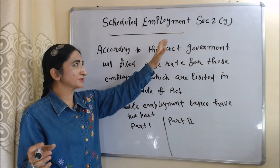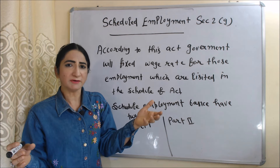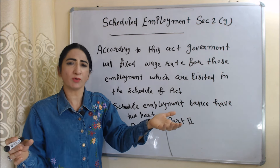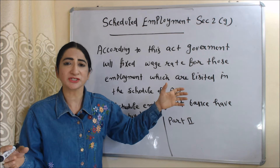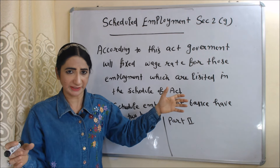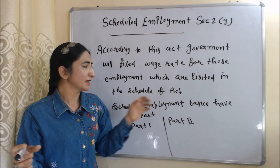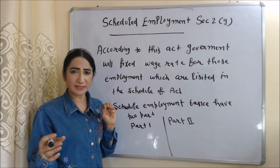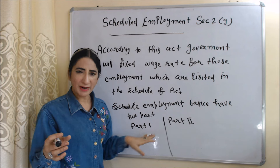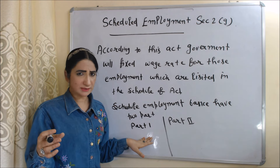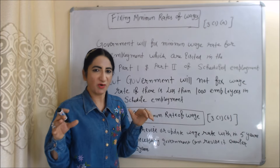Now we are going to talk about scheduled employment. According to Section 2(g) of this act, the government will fix the minimum wage rate only for those employments which are listed in the schedule of this act — these are called scheduled employment. Scheduled employment is basically divided into two parts: Part One and Part Two.